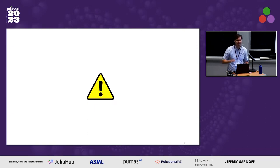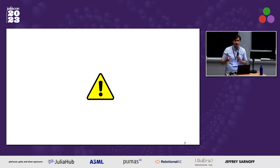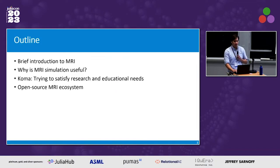So I will not go straight to the code. I will explain what MRI is, why you should care about MRI, why MRI simulations are useful, and then how I use Julia to create an MRI simulator that satisfies all my needs. I'll cover the introduction to MRI, why it's useful, then Koma — my simulator — how I approach this with Julia, and a little bit about the open source MRI ecosystem.